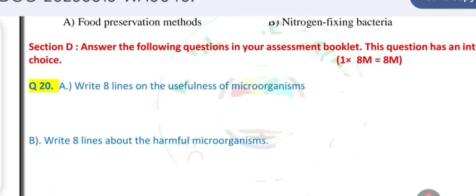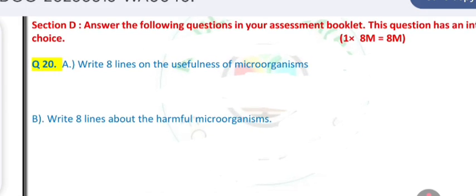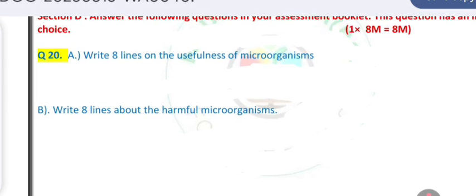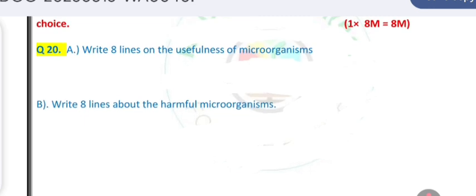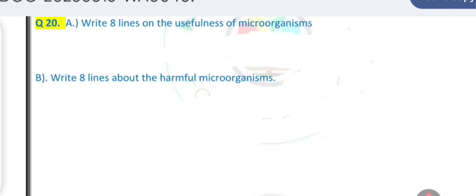Section D contains one question of eight marks — either 20A or 20B. You can attempt either one. Question 20A: write eight lines on the usefulness of microorganisms. Question 20B: write eight lines about harmful microorganisms. This is the model question paper brought to you for preparation purposes.